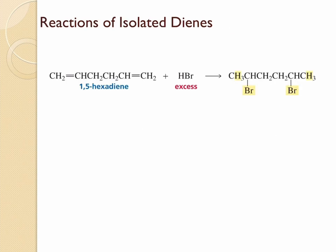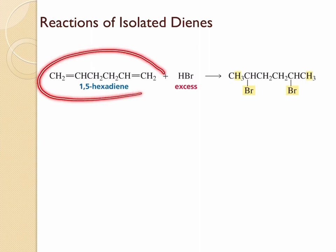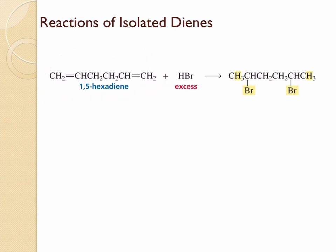When isolated dienes react with electrophilic agents they are going to react pretty much in the same way as normal alkenes would do. For example, when this isolated diene is reacted with excess HBr, both double bonds are going to undergo electrophilic addition following Markovnikov's rule. So let's apply Markovnikov's rule and find out what product will be obtained.